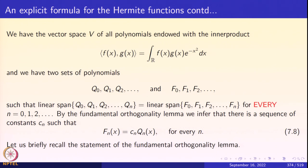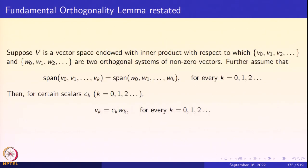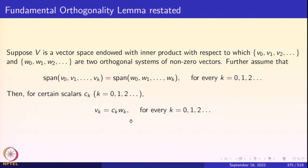Briefly recalling the fundamental orthogonality lemma: if V is a vector space with an inner product and you have two sets of orthogonal systems of non-zero vectors such that the linear span of the first k+1 of the v's equals the linear span of the first k+1 of the w's for every k, then there are scalars c_k such that v_k = c_k · w_k. So, except for determining the constants c_n, we have practically found the Hermite polynomials: each is a constant multiple of q_n, namely e^(x²) times the nth derivative of e^(−x²).